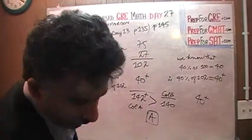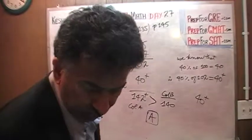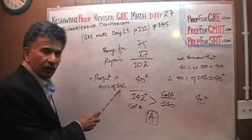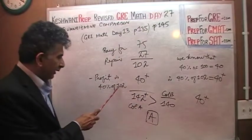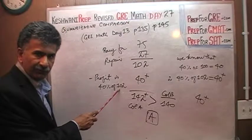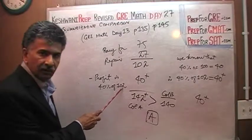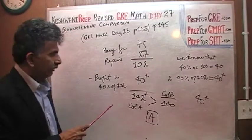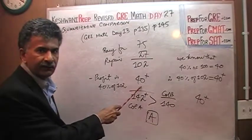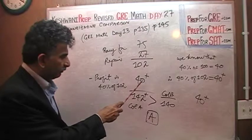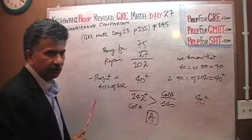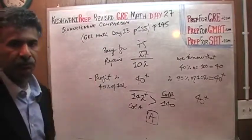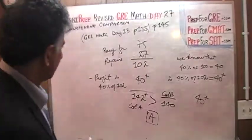That's it. Although figuring out 40% of 102 should not be that difficult — 10% of 102 is $10.20, so 40% is $40.80 — you are not going to put that down because it serves no purpose. Just put something more than 40. These are quantitative comparison questions; you are not being asked to compute anything. Let's move on to the next one.